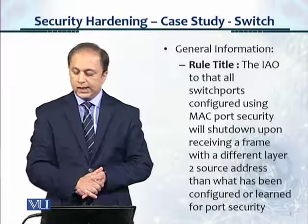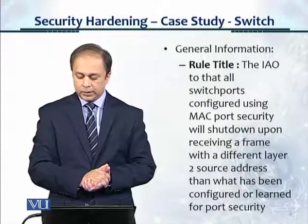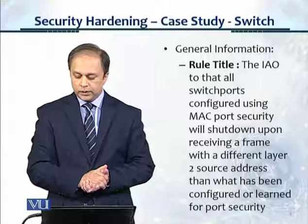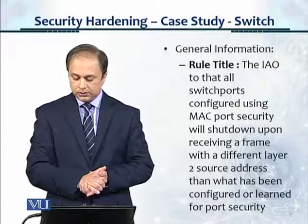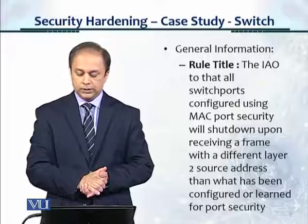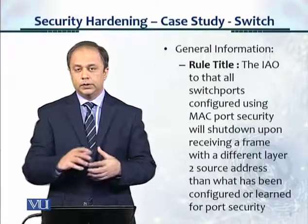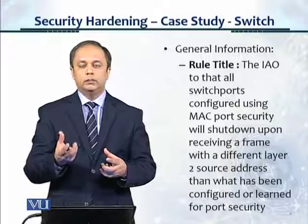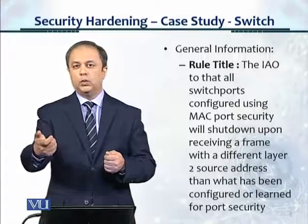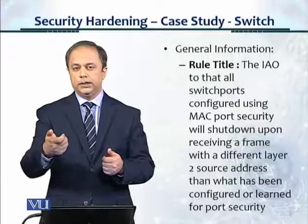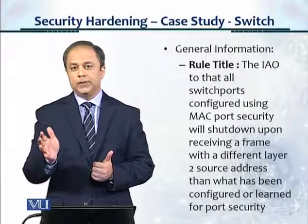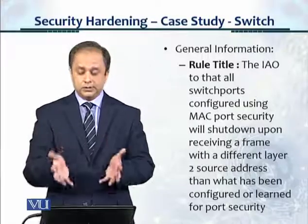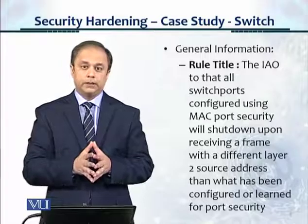So it says the IAO — we would ignore that part. All switch ports configured using MAC port security will shut down upon receiving a frame with a different layer 2 source address than what has been configured or learned for port security. In port security, when we make a setting, there's only one MAC address that should be connected to that switch port. And if you get frames — Ethernet frames — from a different MAC address, this control actually shuts down that port.